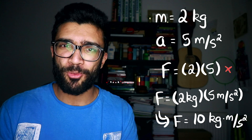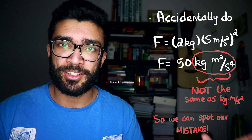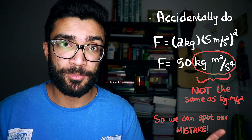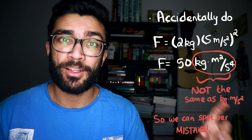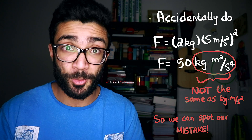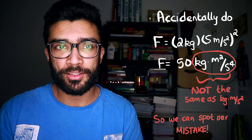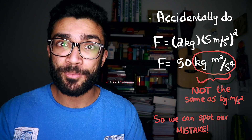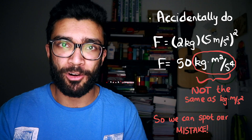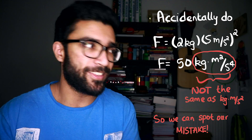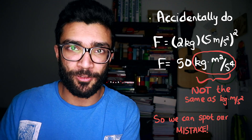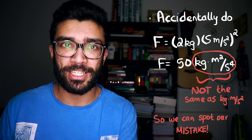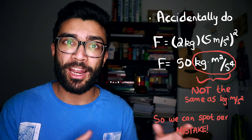But let's say we accidentally multiply the mass by the acceleration squared. We'd have two kilograms times five metres per second squared, whole squared. We'd get a numerical answer of 50, but we'd also get kilograms metres squared per second to the power of four — and that's not the units of a force. So tracking our units in our calculations will help us spot any errors.